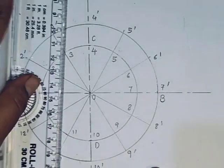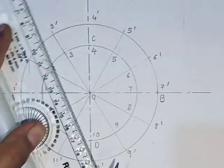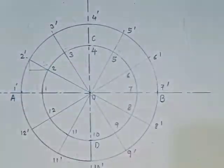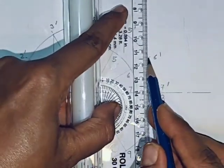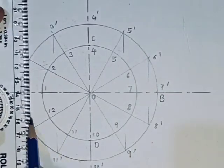Next step is to draw the vertical line from 2 dash and horizontal line from 2. Both these horizontal and vertical lines meet at one point. Similarly, draw the vertical and horizontal line from 3, 3 dash, 4, 4 dash respectively.